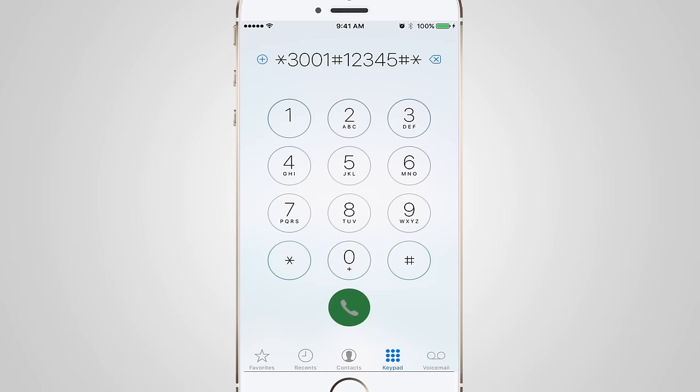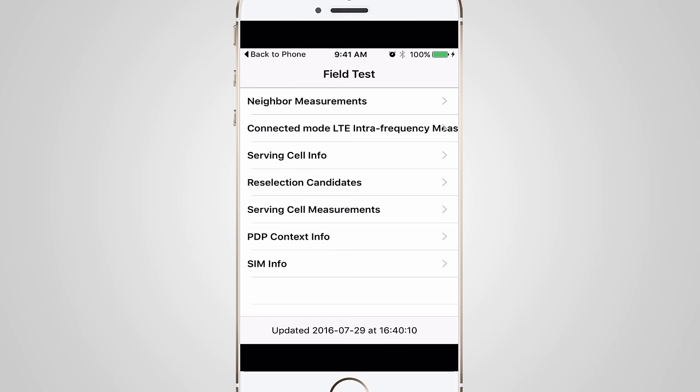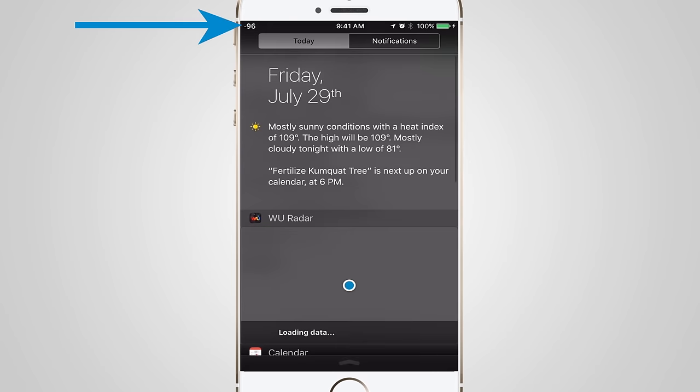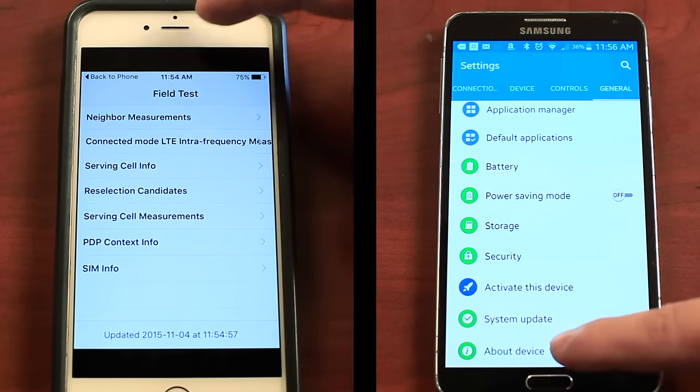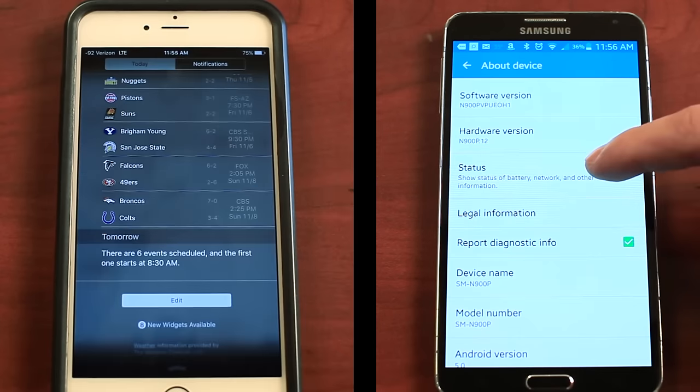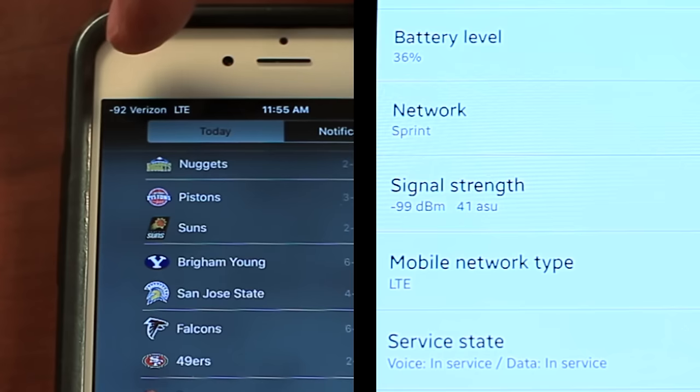You can do this with the bars on your phone, but they're not very reliable. Instead, put your phone into test mode. This will show you a much more precise numerical reading of your signal. This is available on Android or iOS devices and it's easy to do. Check out this video and we'll walk you through the process.